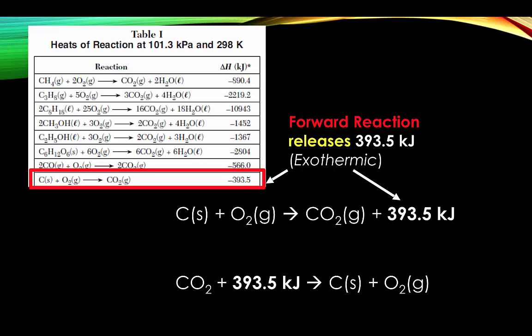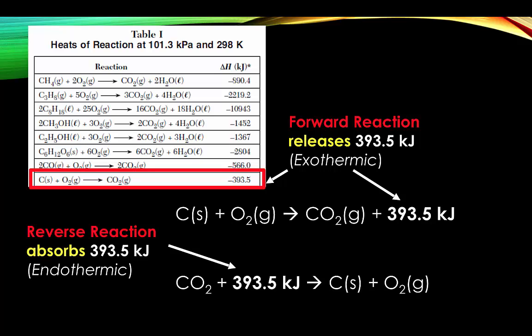If we refer to the reverse reaction, the opposite occurs — what was a product becomes a reactant and vice versa, including where the energy is. So if this forward reaction has a negative delta H, meaning it's exothermic and energy counts as a product, then reversing the reaction makes it endothermic. The energy now becomes a reactant, and it becomes an endothermic process of positive 393.5 kilojoules.